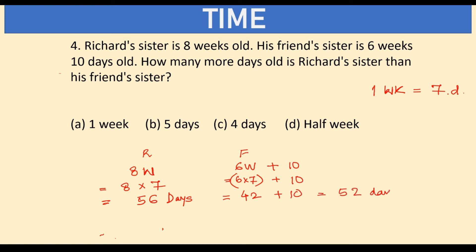The difference is 56 minus 52, which is 4 days. So Richard's sister is option C, 4 days older than his friend's sister.